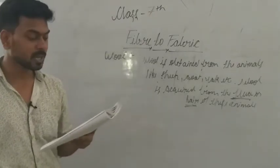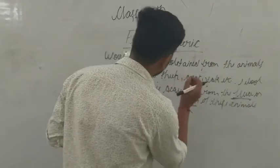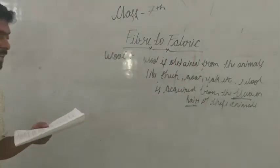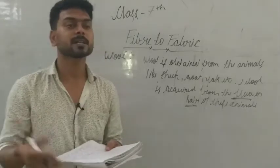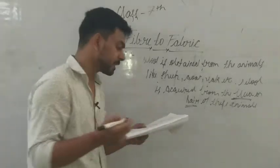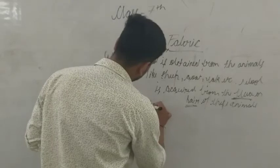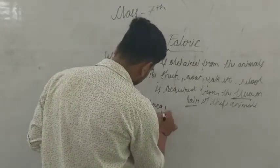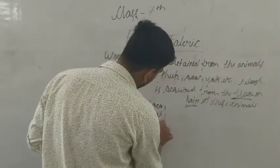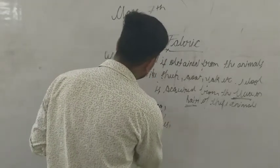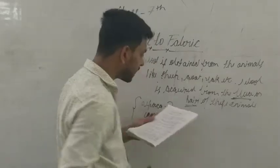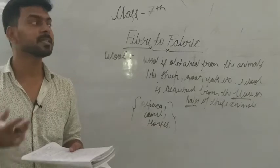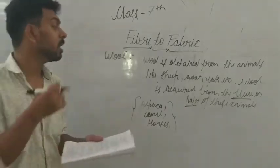So from these animals — alpaca, camel, sheep, goat, and horse — we obtain wool. All of these are wool-yielding animals. The largest amount of wool production mainly comes from sheep. Now let's start with the production of wool from sheep.